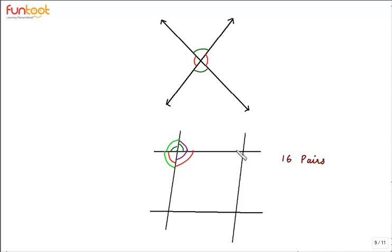For each pair of adjacent angles, we should remember that they have a common vertex, they have a common arm, they do not overlap, and they are in the same plane.